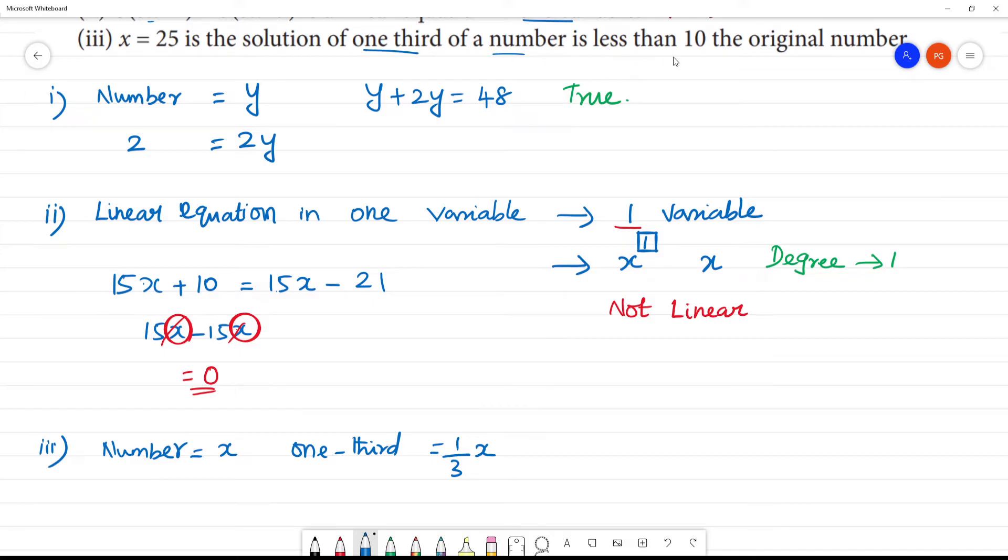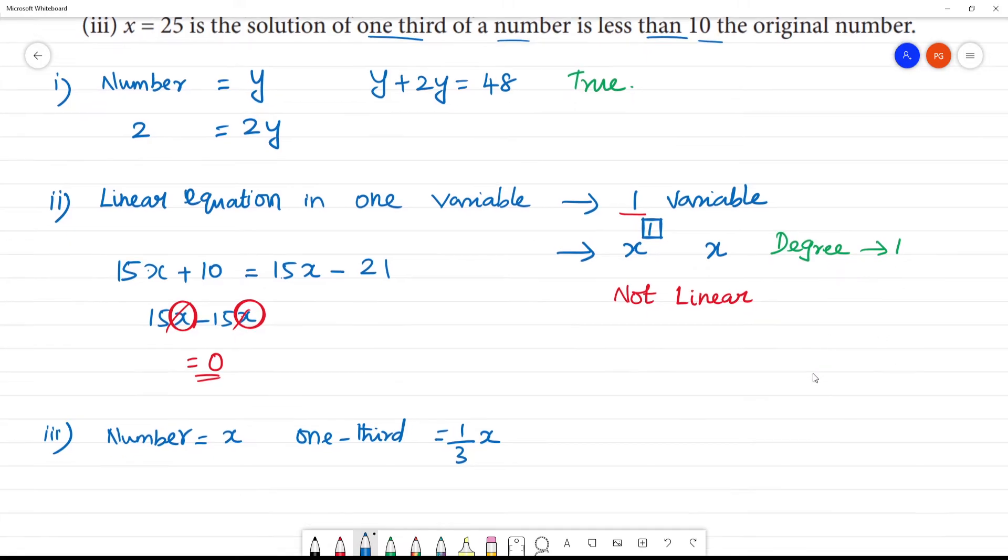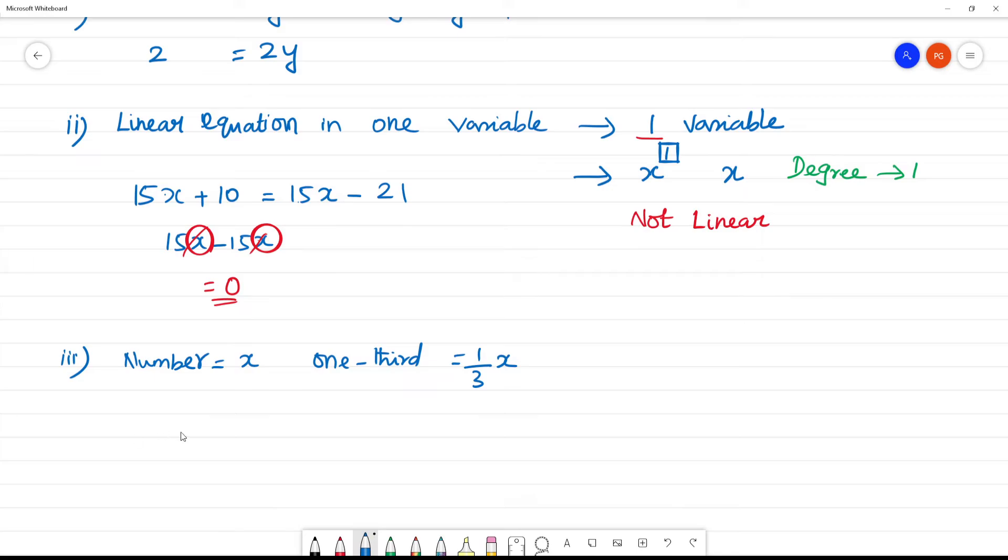One third of the number is 1 by 3 of x. One third of the number is 10 less than the original number. If 10 less than the original number, the original number minus 10. So x minus 10. Clear?